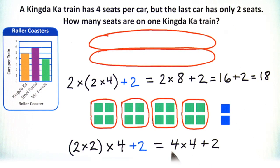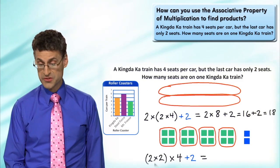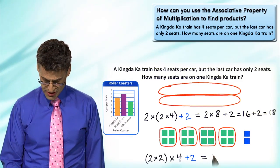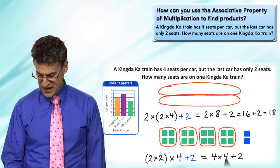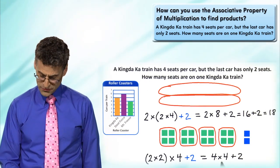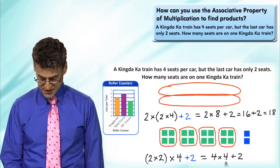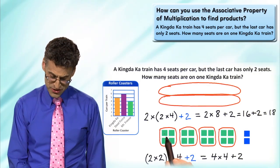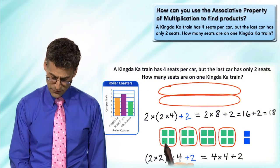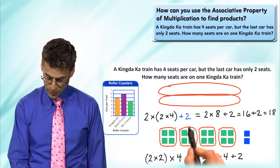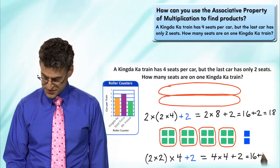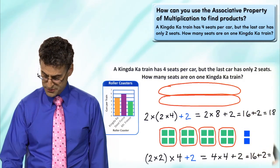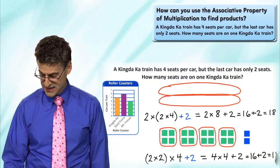Back to work. We always do what's inside the parentheses first: two times two equals four. Then four times four - don't forget the plus two, and we always do multiplication before addition. Four times four is sixteen. You can count for yourself: one, two, three, four - there are four seats in each car, and four cars. Sixteen plus two is eighteen.